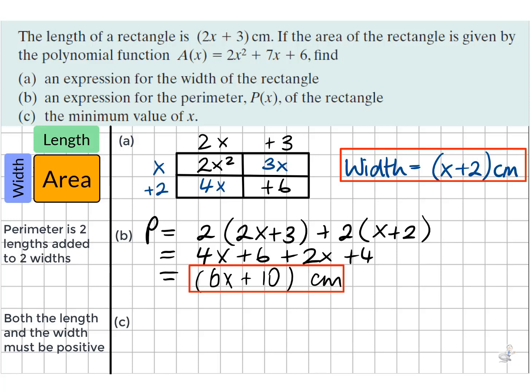What we do know is that neither the width nor the length can be negative. They must both be positive. If the length was positive, greater than zero, this would give us that 2x is greater than negative 3, and that x is greater than negative 3 over 2, which is negative 1.5.